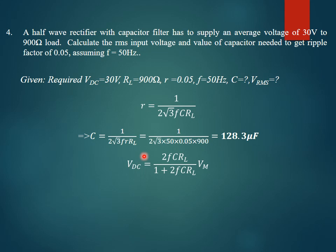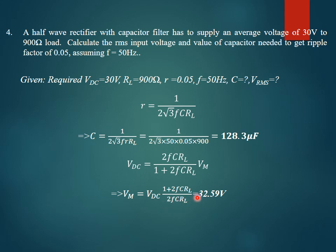To determine the RMS input voltage, we first need the peak input voltage Vm. Using the DC voltage formula VDC = (2·f·C·RL · Vm) / (1 + 2·f·C·RL), we rearrange to get Vm = VDC × (1 + 2·f·C·RL) / (2·f·C·RL). Substituting all known parameters gives Vm = 32.59 volts.